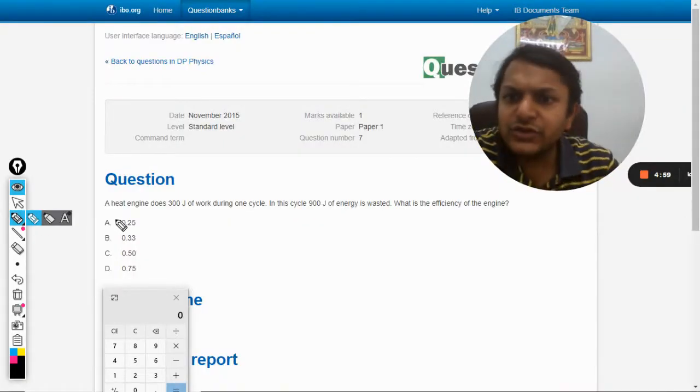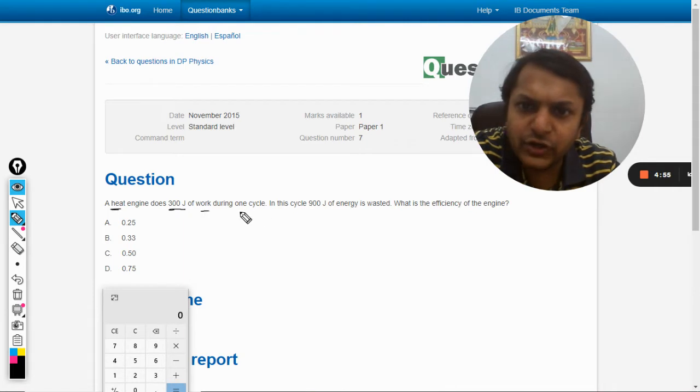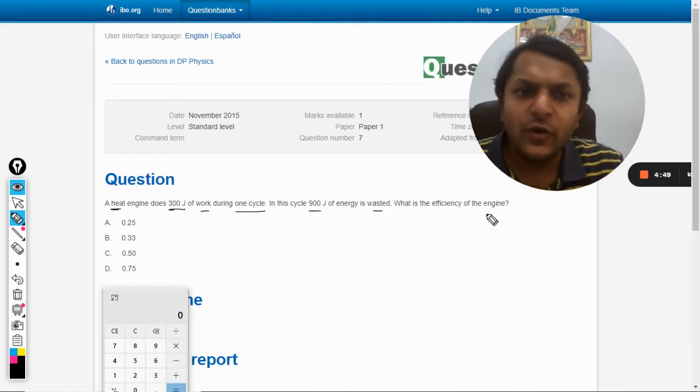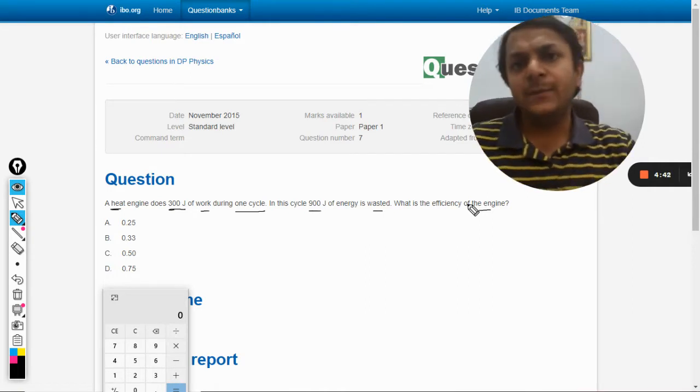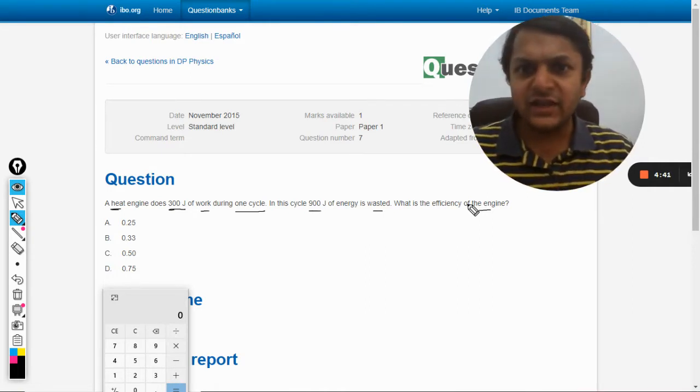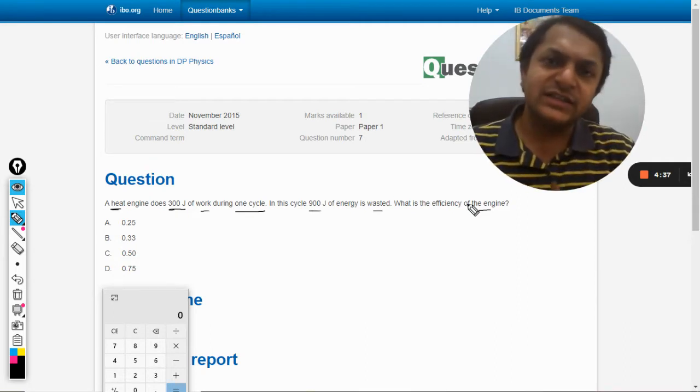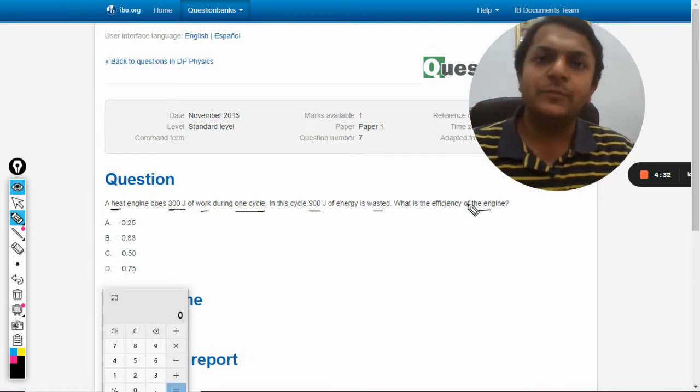In this question, a heat engine does 3 joules of work during one cycle. In this cycle, 900 joules of energy is wasted. What is the efficiency of the engine? This question is from the work and energy chapter, but I think it belongs to thermodynamics.